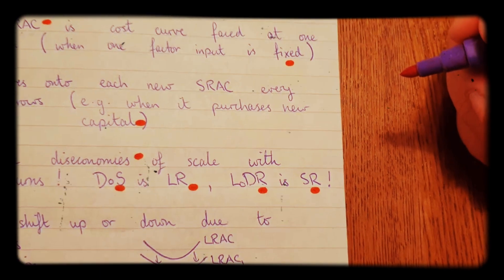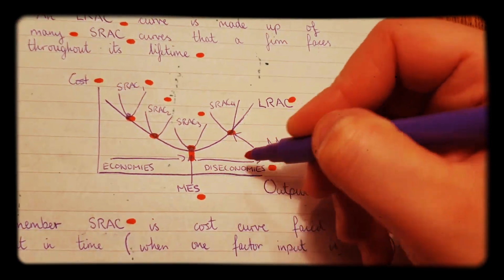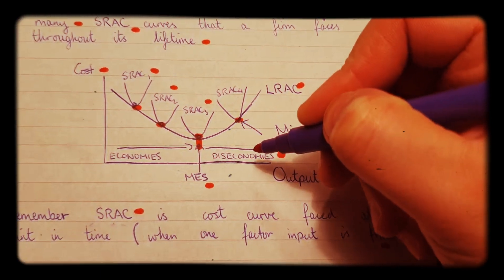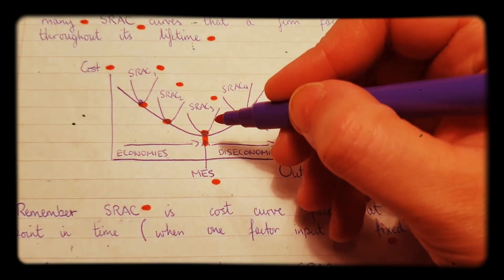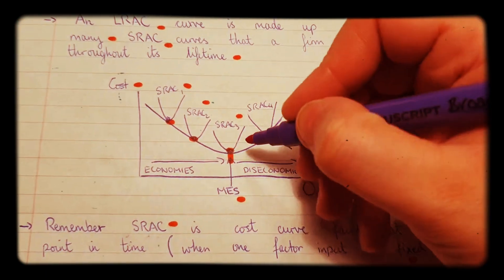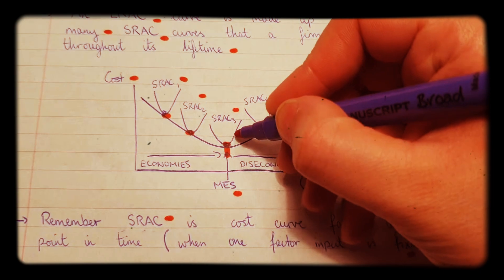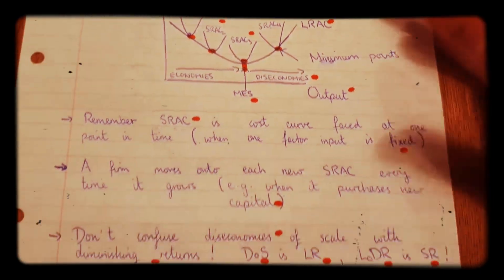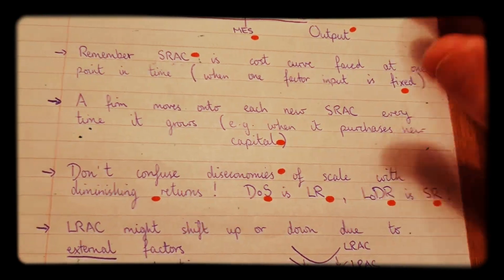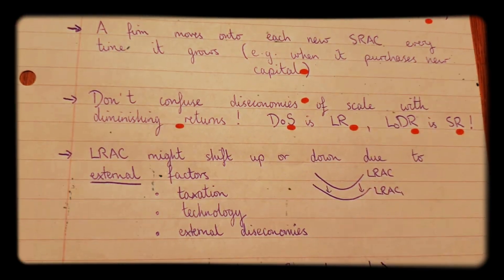So, diseconomies of scale is not the same thing as diminishing returns, which is what causes the short run average cost curve to start rising. So, don't get those two things mixed up.